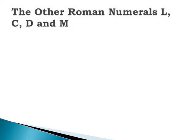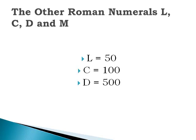The other Roman numerals are L, C, D, and M. The only way to remember these is just to memorize them — they'll come to you after a while. L equals 50, C equals 100 (a helpful tip: a C-note is $100), D equals 500, and M equals 1000.